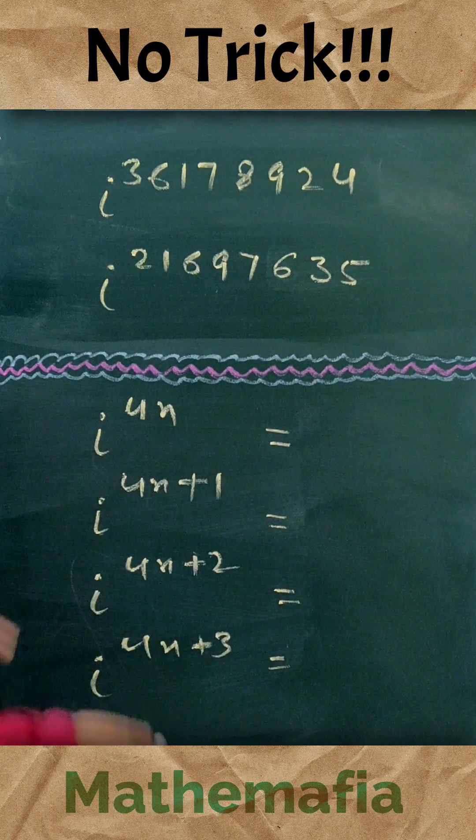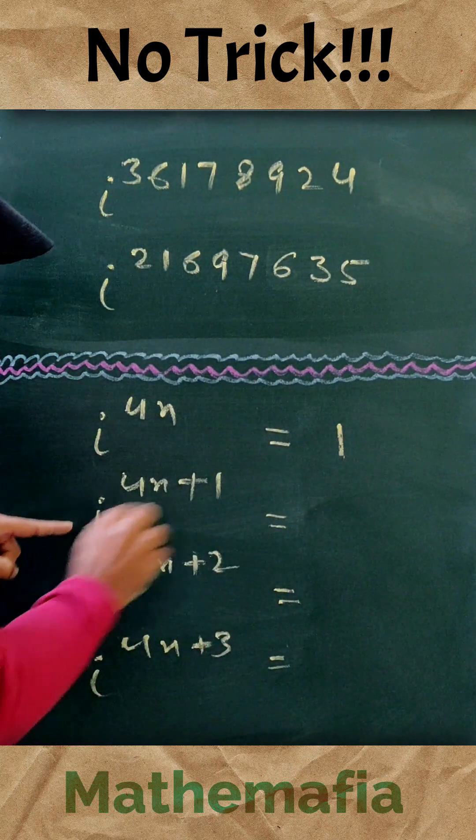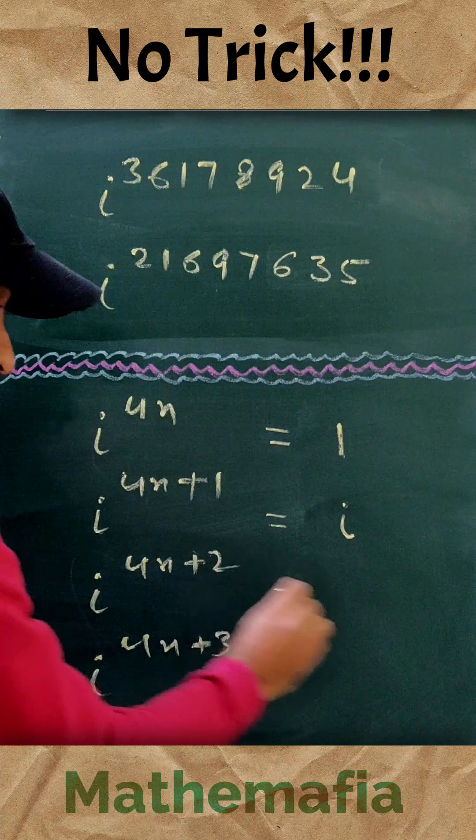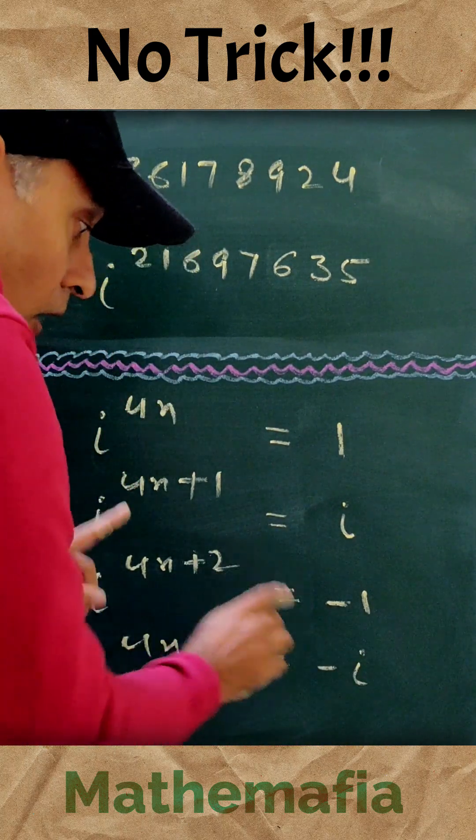Now the important thing is that iota to the power 4n is always equal to 1, and this is always equal to iota, and this will be minus 1, and this will be minus iota.